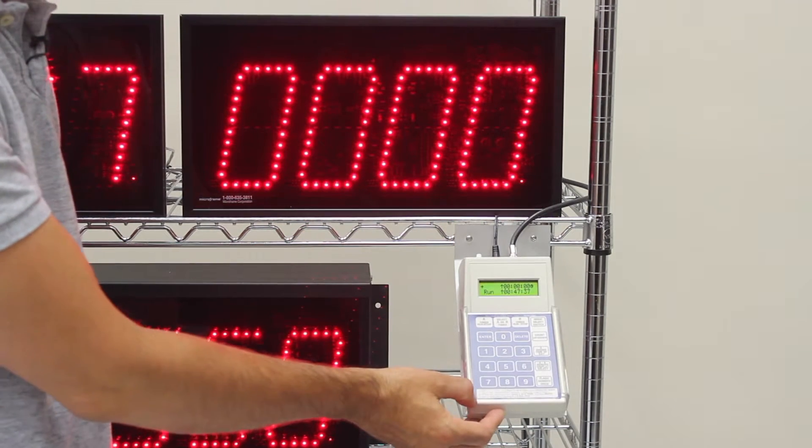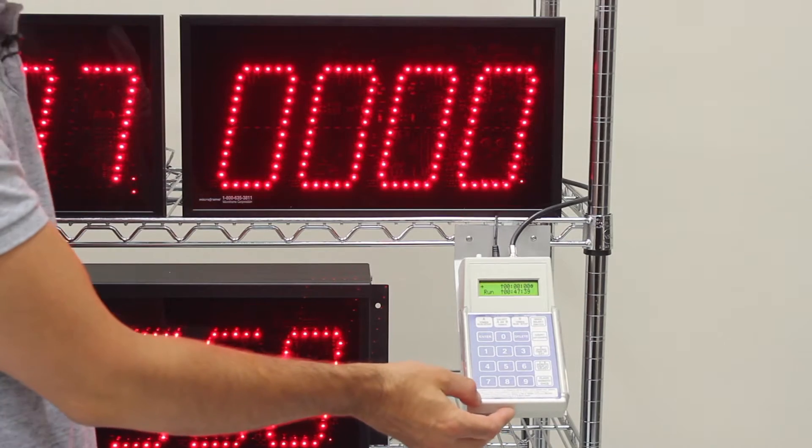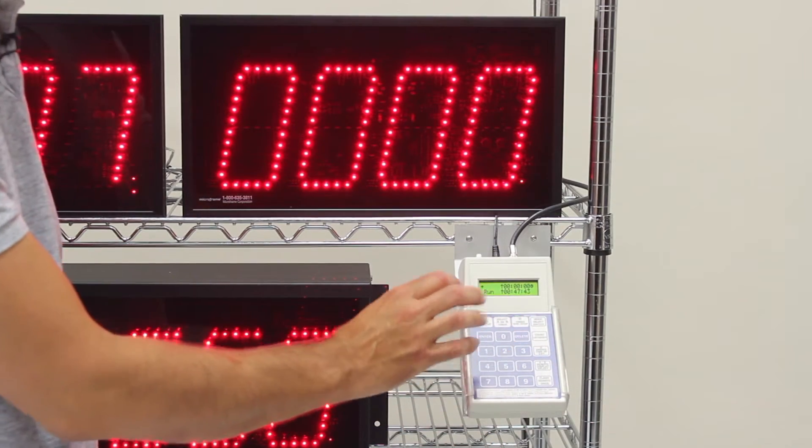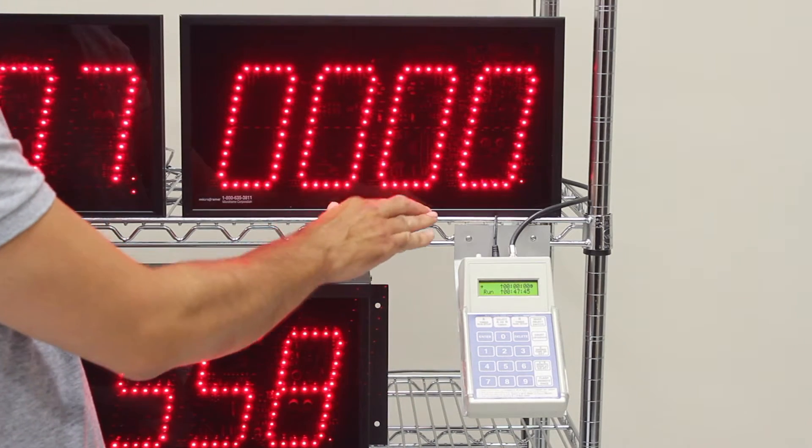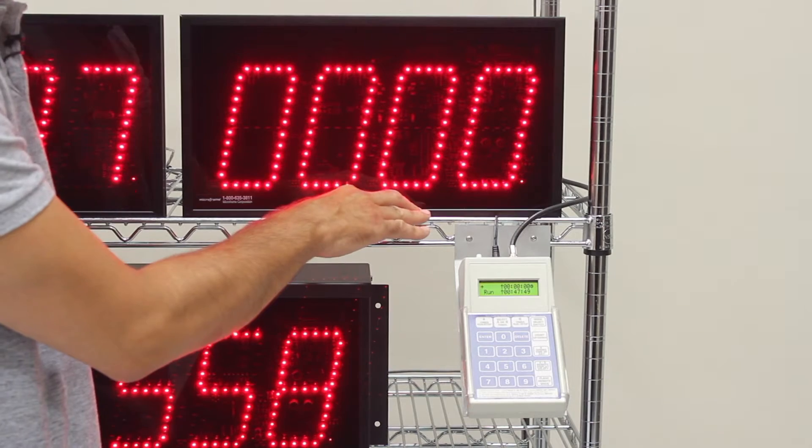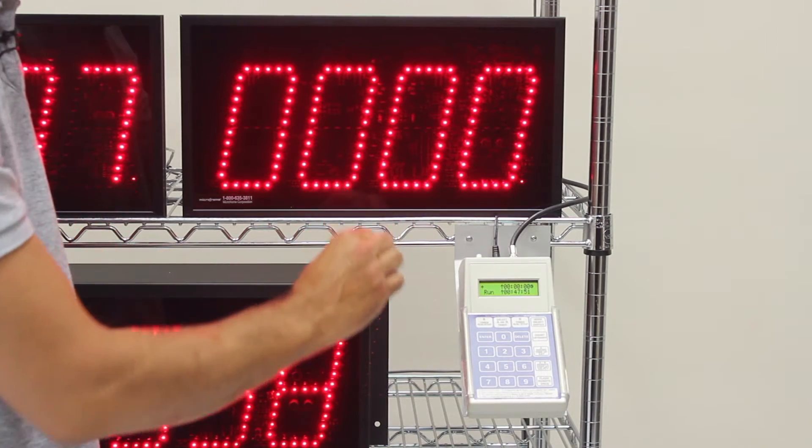Typically, the keypad would be in a sound booth or a control room, and an operator would be there starting and stopping and controlling the time, and a speaker or an event coordinator would be able to see their time remaining or their time elapsed.